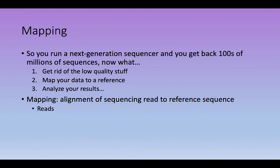Mapping involves a few key terms. A read is an individual sequence coming off a sequencing run. A reference is something considered known — a sequence already assembled, annotated, and considered an accurate representation of what we're interested in. And we need to perform an alignment using methods similar to, but somewhat different from, what we've discussed before.